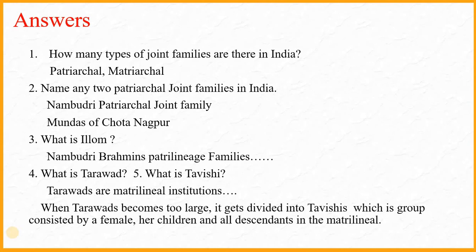Before we go on, let's give you the answers of the questions we had asked in the last lesson. The first question was: How many types of joint families are there in India? The answer is two types — Patriarchal and Matriarchal. Name any two patriarchal joint families in India. The answer is Nambudri Patriarchal Joint Family and Mundas of Chota Nagpur.